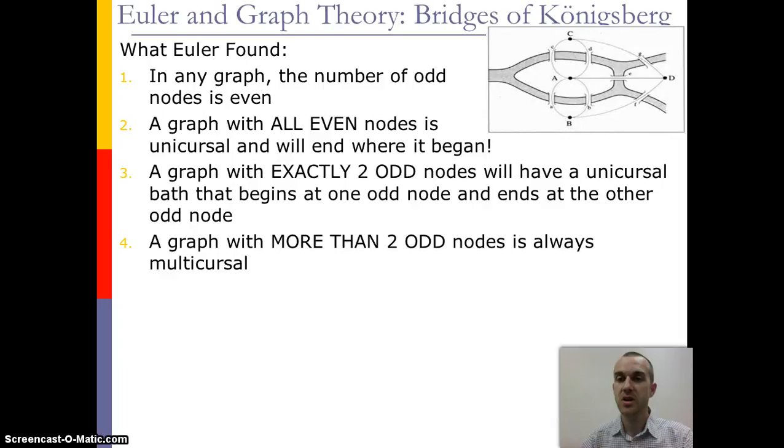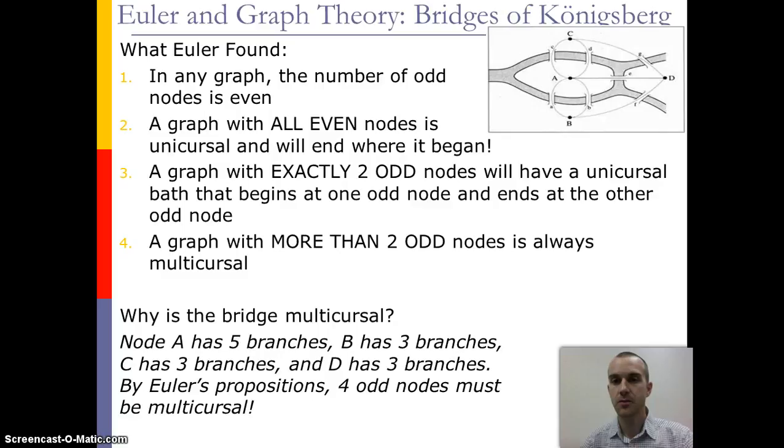So if we look at bridges of Königsberg, what we notice is that A has five branches, one, two, three, four, five. B has three branches, C has three branches, and D has three branches. So in this case, all four nodes are odd. And since that's more than two nodes being odd, it has to be multicursal.